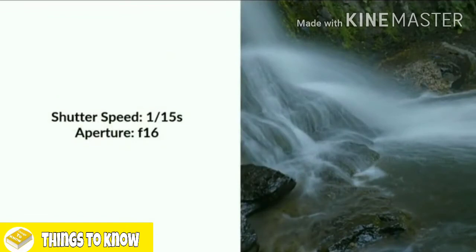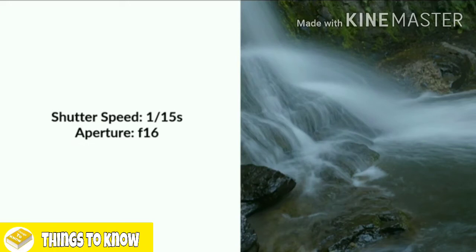Here we've got a nice flowing waterfall. Using a 15th of a second — slow enough to allow the water to flow nicely through the scene, but actually quite a long time in terms of light. To compensate and get the right amount of light, the aperture is at f16. The camera decides that if the exposure is at a 15th of a second, we need to use an aperture of f16 to get the right amount of light.